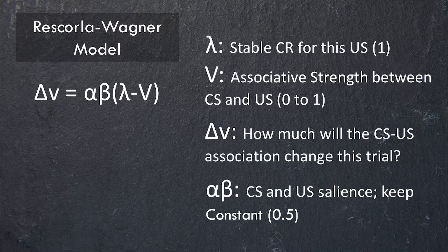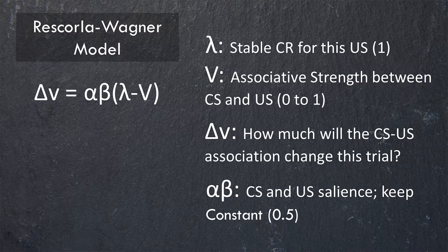If the trial wasn't rewarded, the maximum CR you would expect is none — so in that case lambda would be zero; you don't expect any behavior. Lambda is determined by the US: a larger US gives you a larger lambda, no US gives you a value of zero. For our purposes, let's start with a value of one and we're not going to change that for a while.